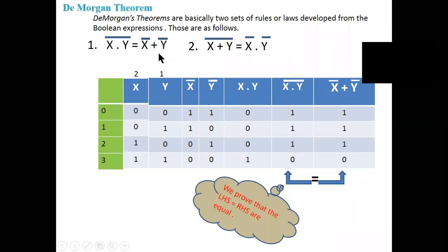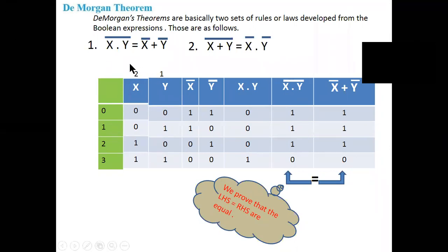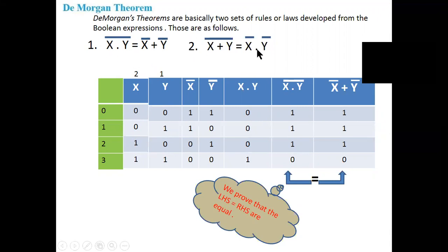Come to De Morgan's law. De Morgan's theorem can be proved using the algebraic method, but algebraic method will take very very long expressions — it's very difficult. So it is better to use the truth table. There are two laws: first, x dot y whole bar equal to x bar plus y bar.